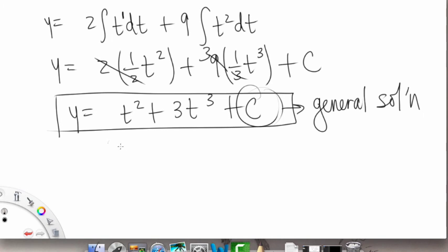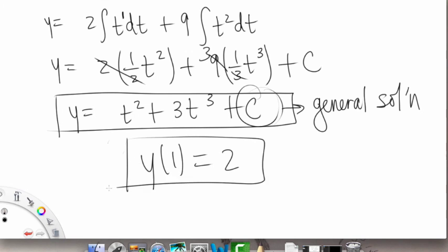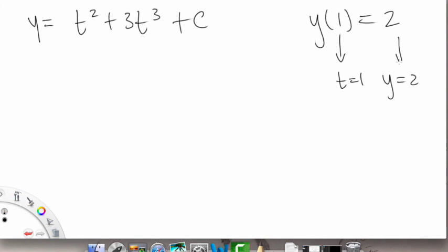But from this point what we can do is now solve for a specific solution because we're going to take our given that y(1) = 2, and this is our initial condition that's going to help us find that specific solution. So what we found was y = t² + 3t³ + C and we have that y(1) = 2. So what this means is that when t equals 1, then y equals 2.